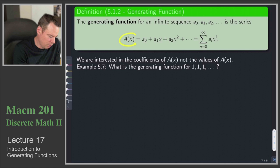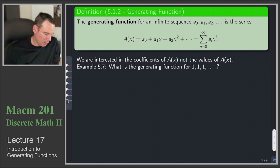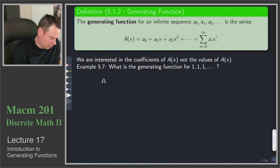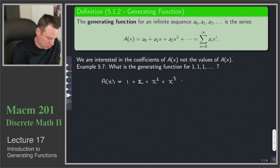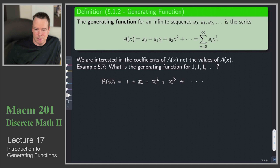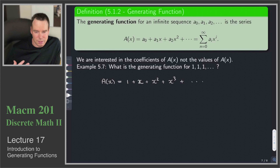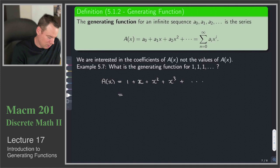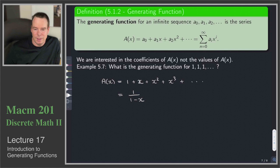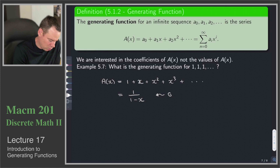It's just a way to encode our infinitely long sequence as a single object — a function — whose coefficients are the terms of our sequence. For example, the generating function for the sequence 1, 1, 1, 1, … is 1 + x + x² + x³ + ⋯. This is a geometric series, so we can write it as 1/(1-x). That is the generating function for the all-ones sequence.